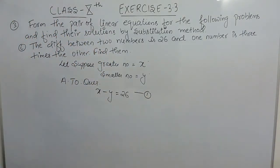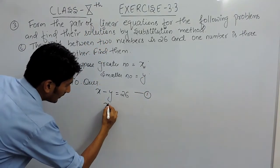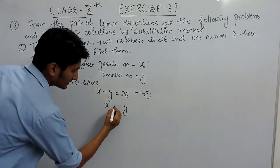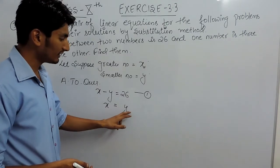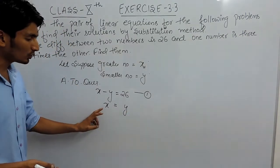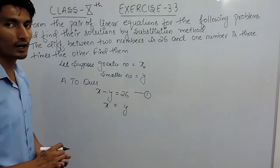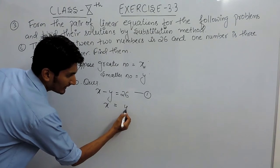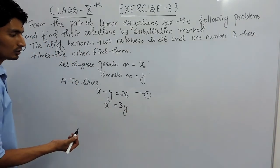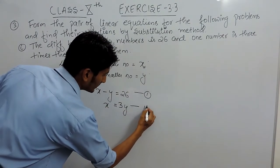In the second part it is given that one number is 3 times the other. Because x is greater, you have to increase the smaller number so that it becomes equal to the greater value — or you can decrease the greater number to equal the smaller. Since the greater number is 3 times the smaller, you multiply y by 3 to get x. So x equals 3y. This is our second equation.